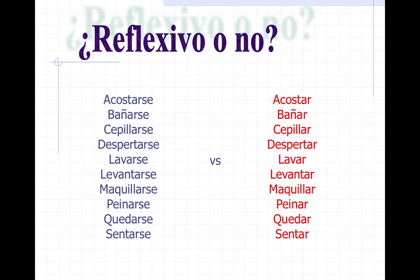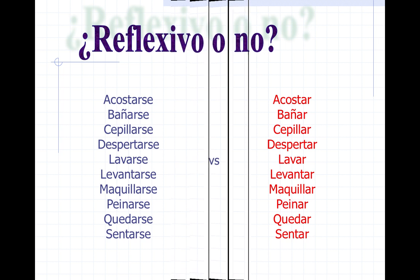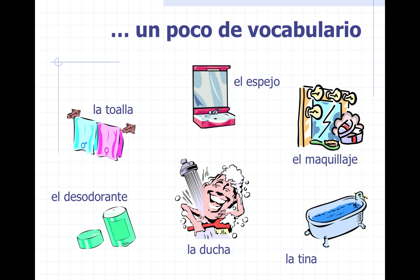Reflexivo o no — the verbs that are reflexive are always going to have -se at the end. If they're not reflexive at that moment, they won't have that -se. Just a little bit of vocabulary: espejo is a mirror, la toalla is a towel, desodorante is deodorant, la ducha is the shower, el maquillaje is the makeup, la tina is a bathtub.